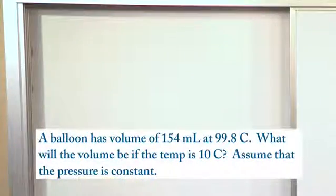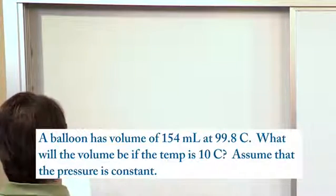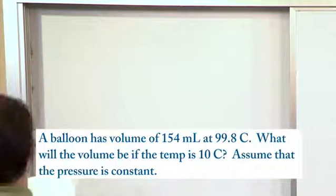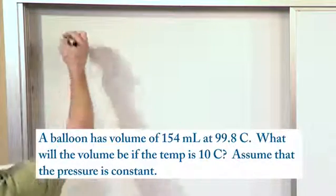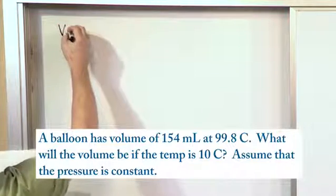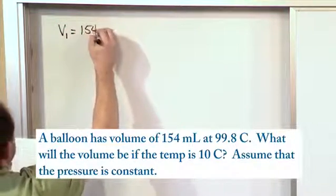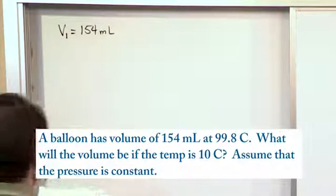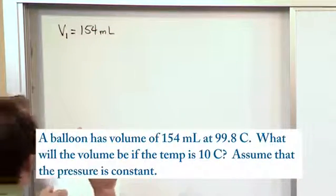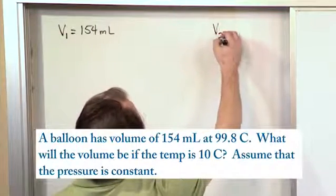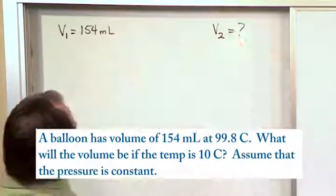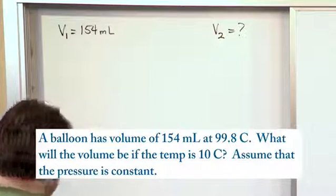So the way I want to handle this is I always want to write down what I know because it just helps me visualize what I need to do. So I know V1 is given to me in the problem. It's 154 milliliters, and then I've got some information about temperature. And then it says, what will the volume be? So you know V2 is what you're seeking. So I would put a question mark there.